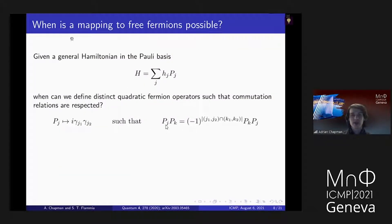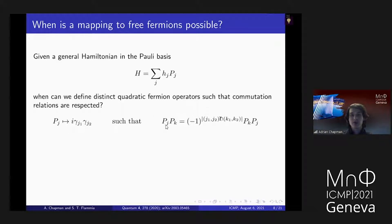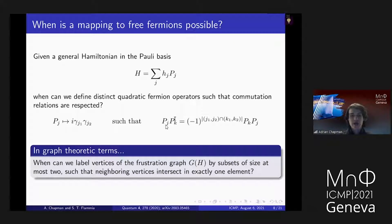Our question is: when can we map a given model to free fermions? Given a general Hamiltonian in the Pauli basis, the question is when can we define distinct quadratic fermion operators such that the commutation relations are respected? I'm going to attempt to associate each Pauli to i times some quadratic in the Majorana operators, and I want to do this such that the Paulis anticommute if and only if the pairs I associate to each Pauli overlap at one Majorana mode. This is a question that can be stated purely in terms of graph theory.